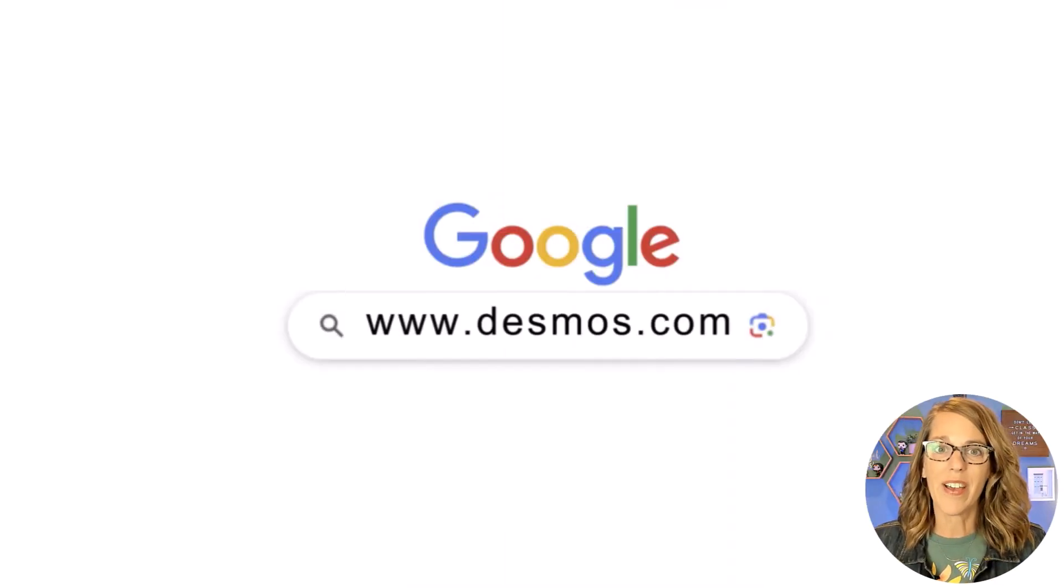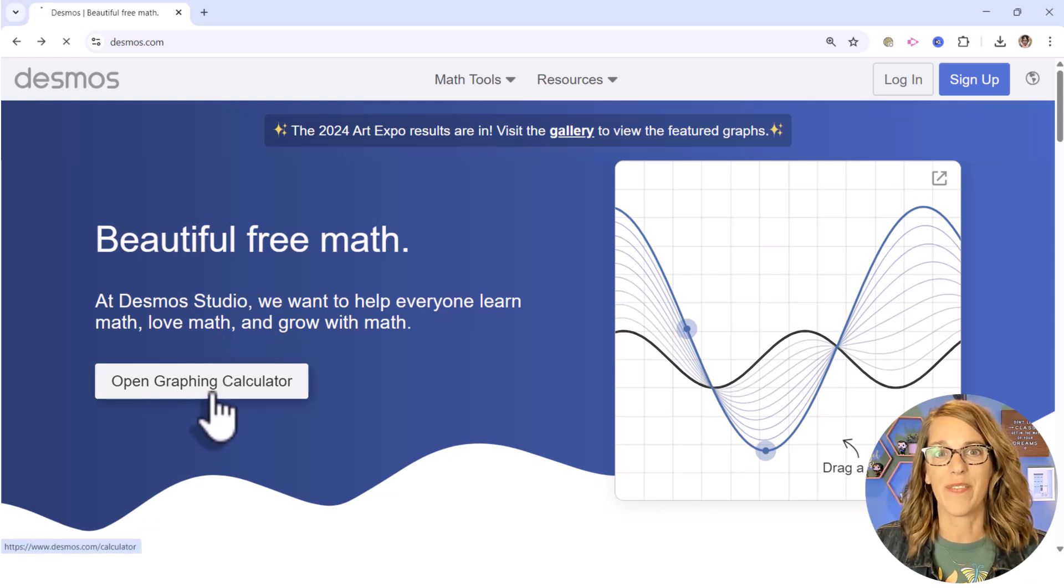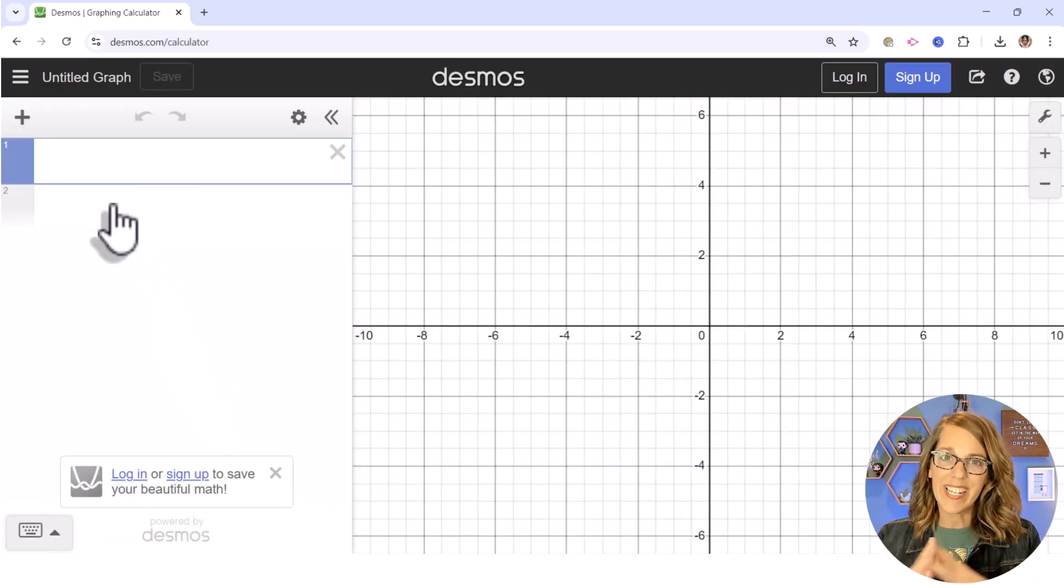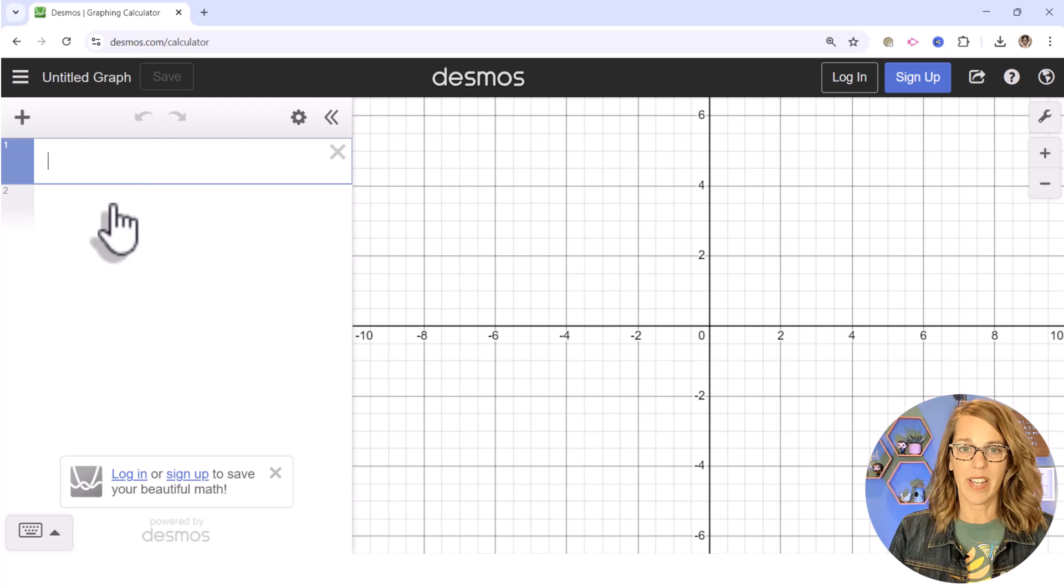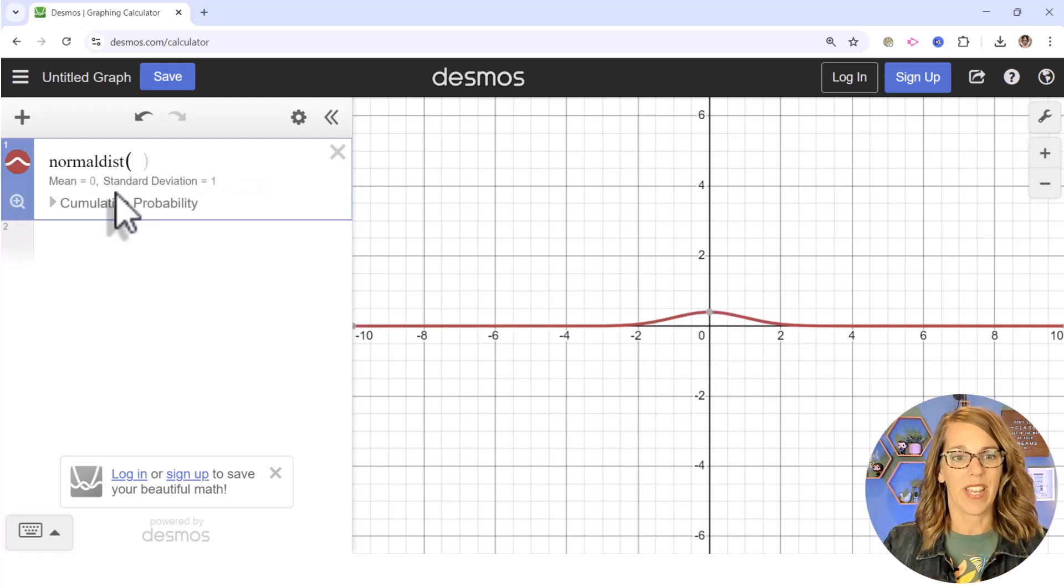I'm going to log into Desmos.com and then click to open that graphing calculator. Now to get to the normal curve function, you want to type normal dist, which is kind of easy to forget.